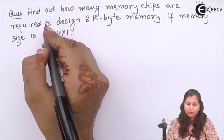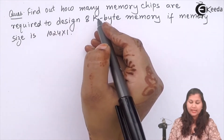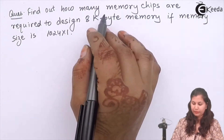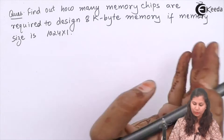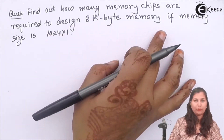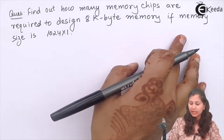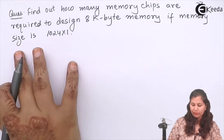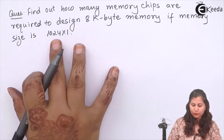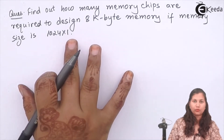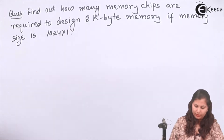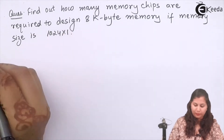Our problem is to find out how many memory chips are required to design 8 kilobyte memory, which is having the memory size as 1024 x 1. So let's solve this problem.